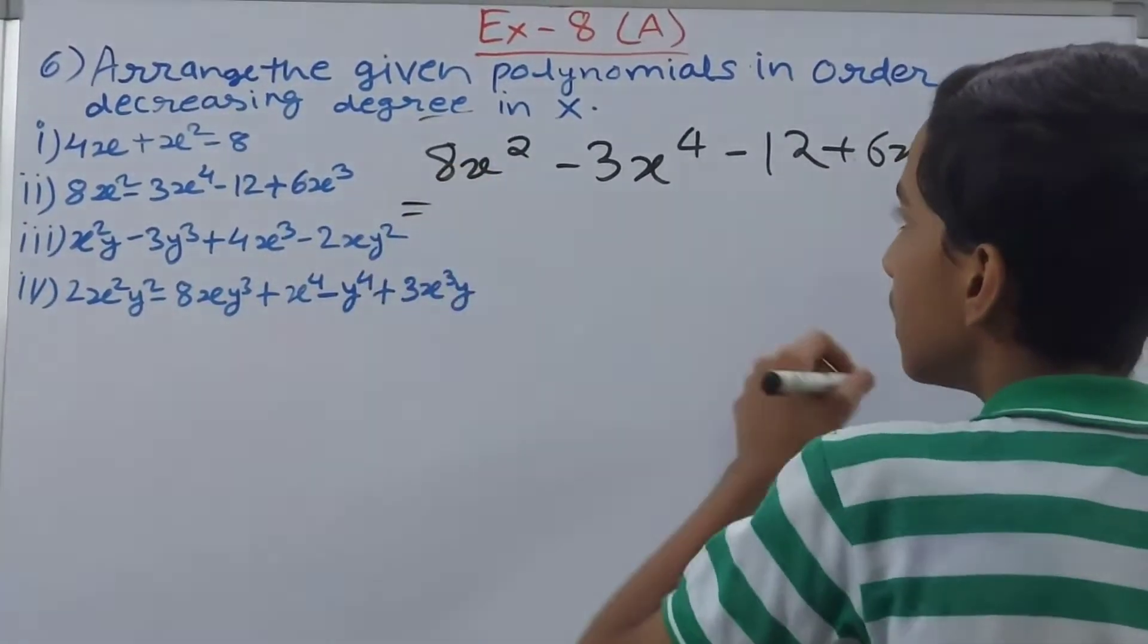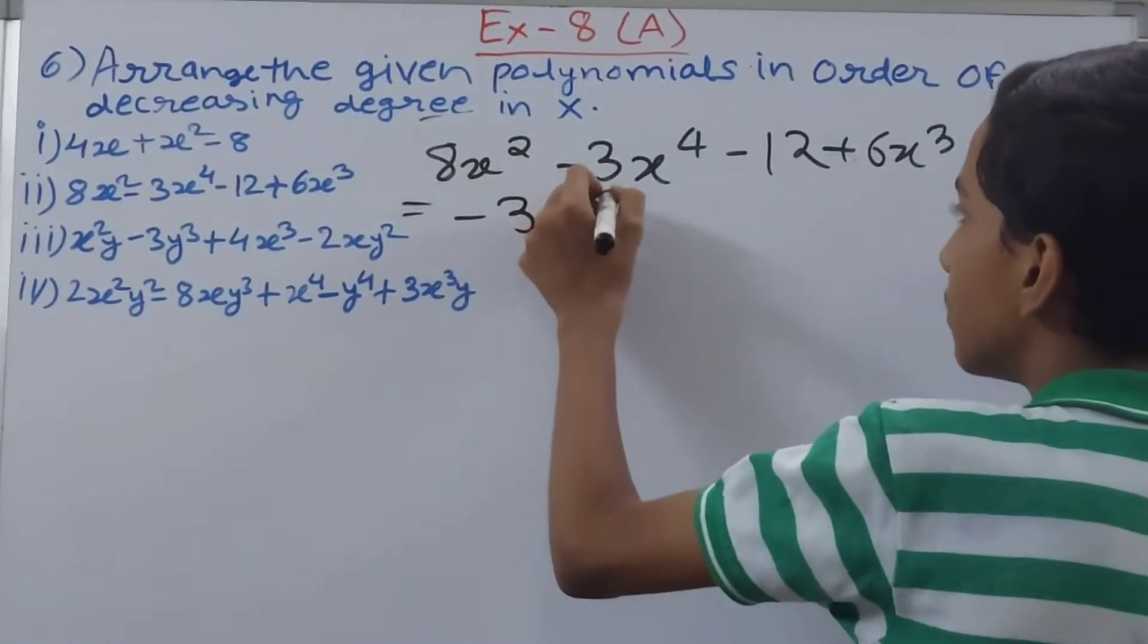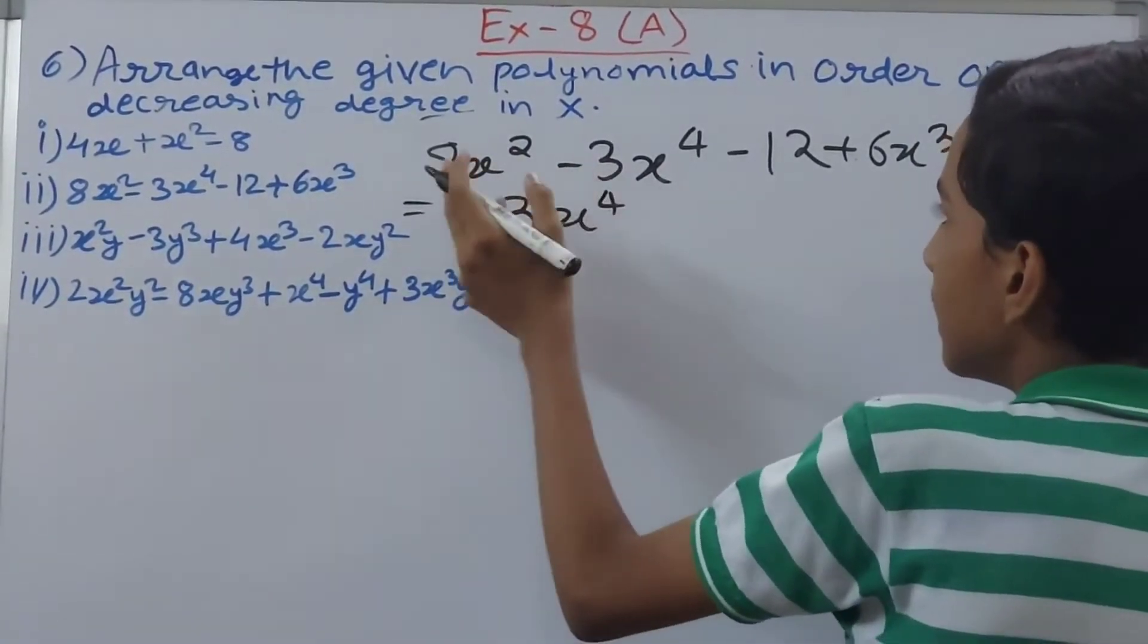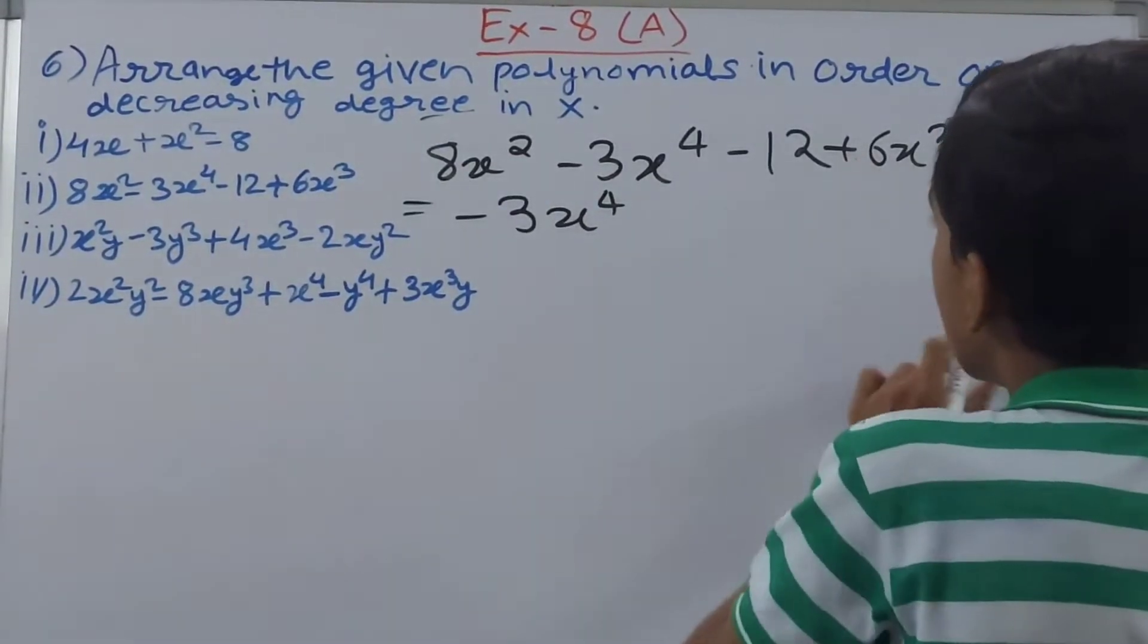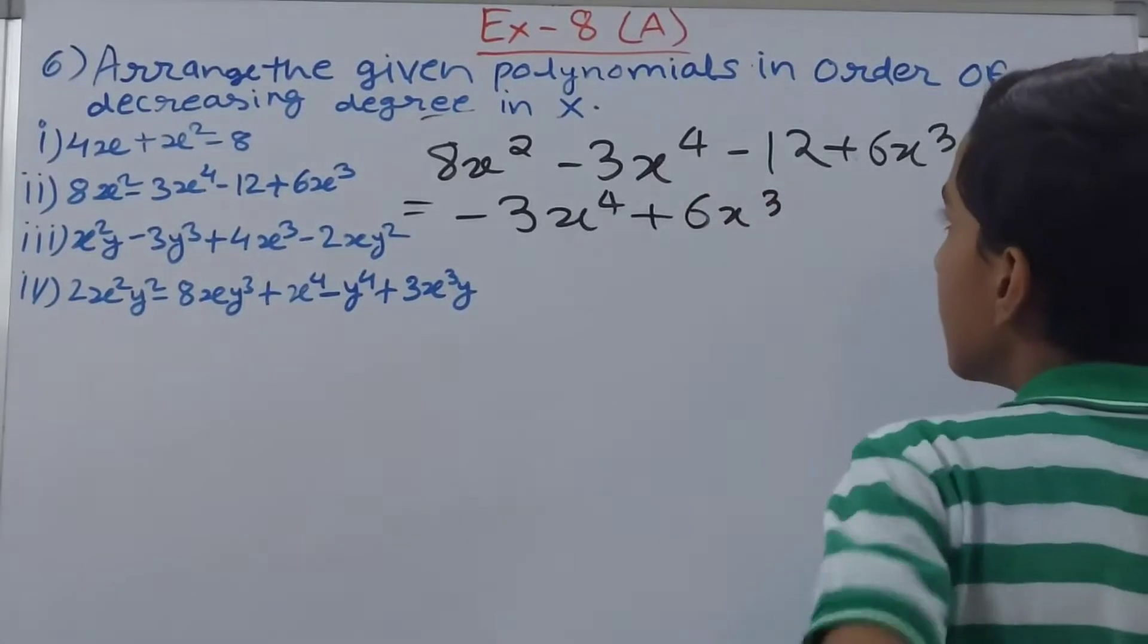Now rearrange them. So first the greatest one will be coming - 3x to the power 4, then the one which is smaller than that, that is plus 6x cube.